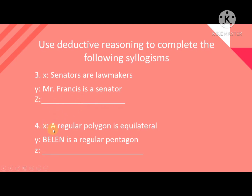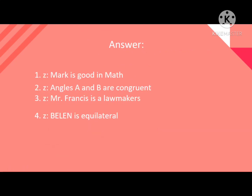Number four: a regular polygon is equilateral; Belen is a regular pentagon. Write your answer for the conclusion. We will now check your answers. Number one: Mark is good in math. Number two: angles A and B are congruent. Number three: Mr. Francis is a lawmaker. And number four: Belen is equilateral. Thanks for watching.